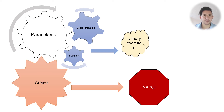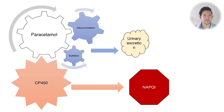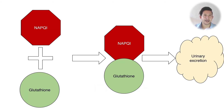Cytochrome P450 processing produces a harmful metabolite called NAPQI. In normal metabolism, about five to ten percent of paracetamol is metabolized to NAPQI, but in overdose you get substantially more.